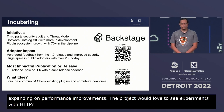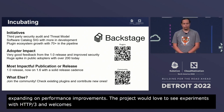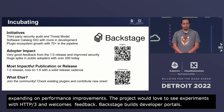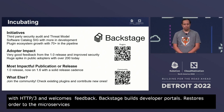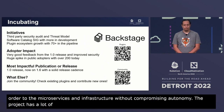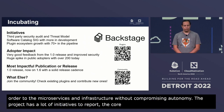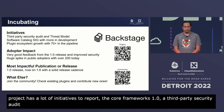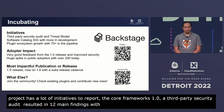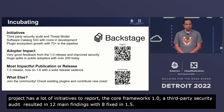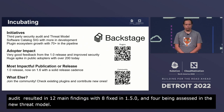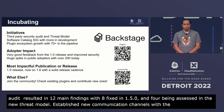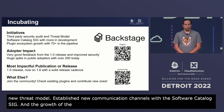Backstage is a framework for building developer portals — it restores order to your microservices and infrastructure without compromising autonomy. The project has a lot to report: the core framework saw a 1.0 release, and a third-party security audit sponsored by OSTIF resulted in 12 main findings, with 8 fixed in 1.5.0 and 4 being assessed in the newly introduced threat model. They've established new communication channels with the Software Catalog SIG, and the plugin ecosystem now has over 70 in the pipeline. Users have given very positive feedback from the 1.0 release and improved security posture through the threat model documentation.